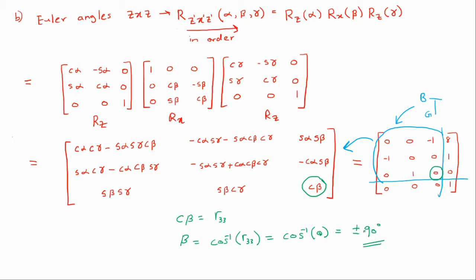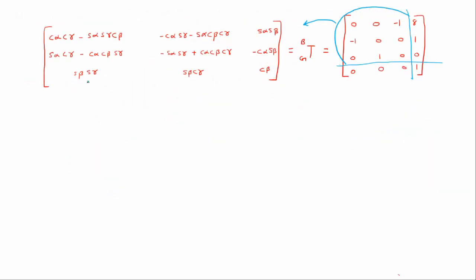In a similar fashion, we can now find our angles alpha and gamma. We can calculate our gamma first using these two terms, as they both have a common sine beta and separate sine gamma, cos gamma terms. The corresponding elements in this matrix would be these two. So we can write out our equations as sine beta sine gamma equal to R third row first column, hence sine gamma would be R31 over sine beta.